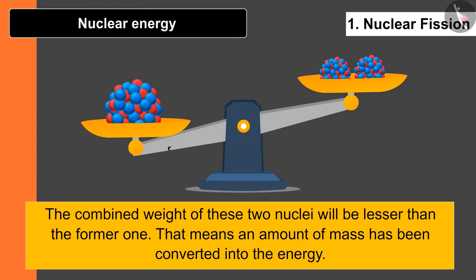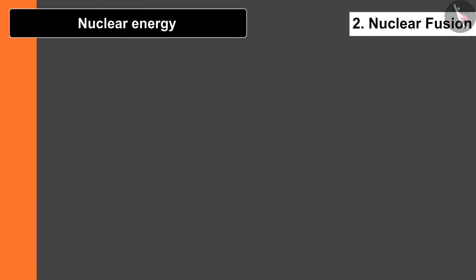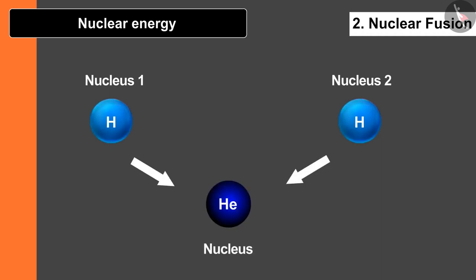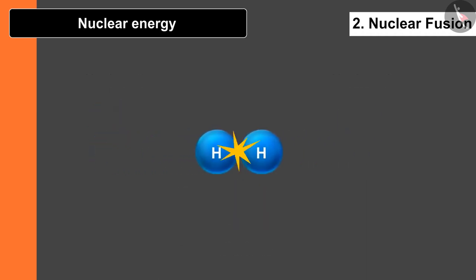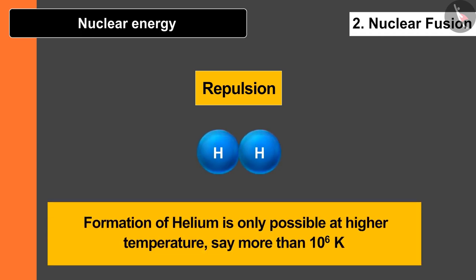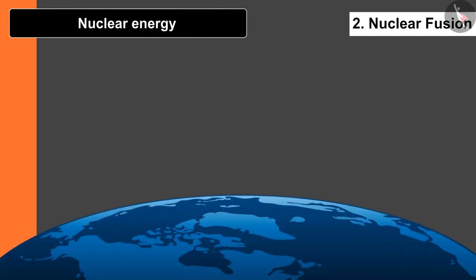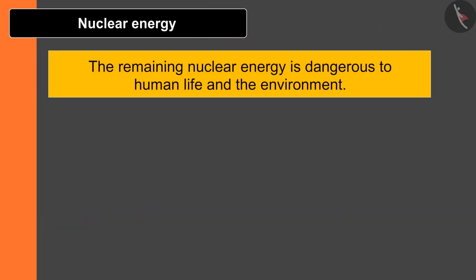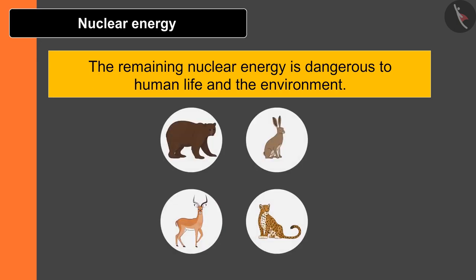In nuclear fusion, two lighter nuclei fuse with each other to form a heavy nucleus — for example, hydrogen nuclei are fused to form helium. Due to the repulsion between hydrogen nuclei, formation of helium is only possible at very high temperatures, more than 10⁶ Kelvin. This kind of temperature is not possible on Earth, but it is possible on the Sun, where fusion commonly takes place. Nuclear energy is dangerous to human life and the environment, so safety is the top priority when obtaining it.